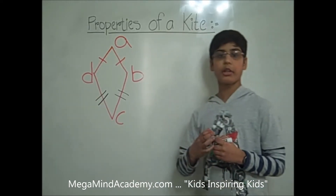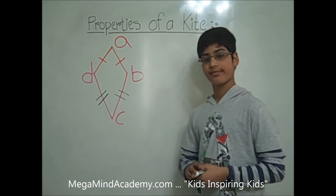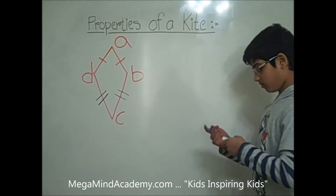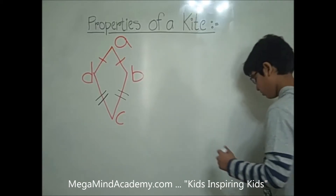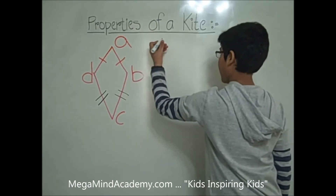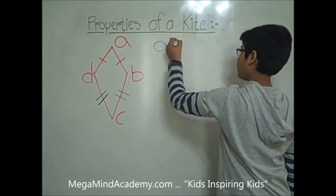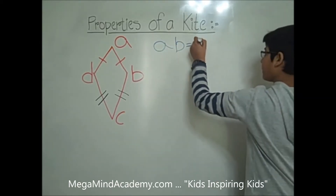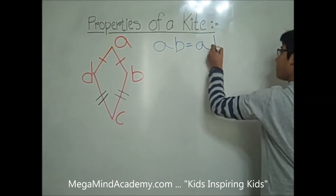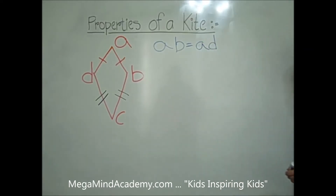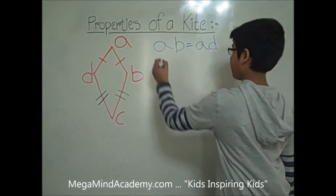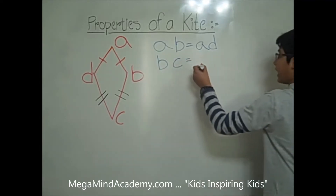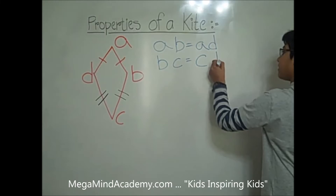Let me write that out. Side AB is equal to side AD, and side BC is equal to side CD.